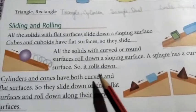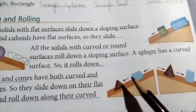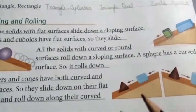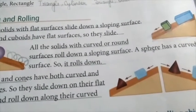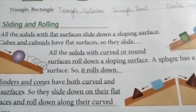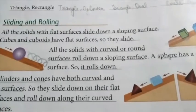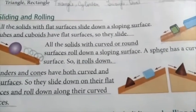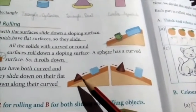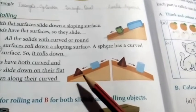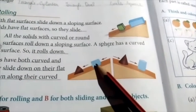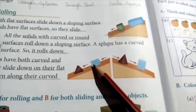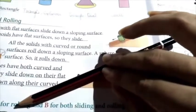Now, cylinders and cones have both curved and flat surfaces. These solids — cylinder and cone — have both a curved surface and a flat surface. So what happens? They slide on the flat surface and roll on the curved surface. When you keep a cylinder with its flat surface down, it will slide.